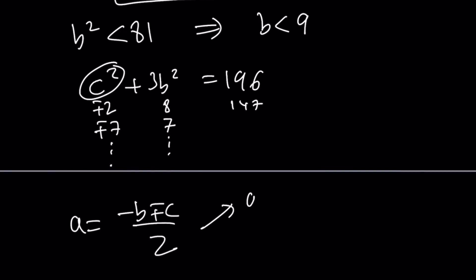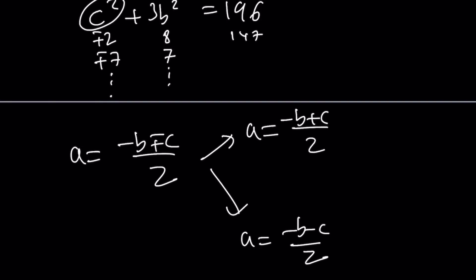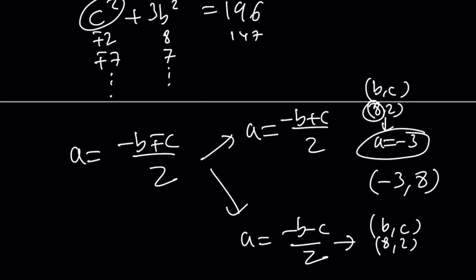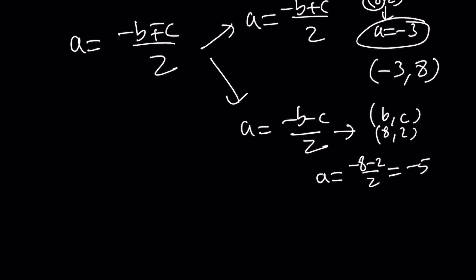We split into two cases: a equals negative b plus c over 2, or negative b minus c over 2. For example, suppose b equals 8 and c equals 2. Then negative 8 plus 2 divided by 2 is negative 3, giving a equals negative 3. So the ordered pair negative 3 comma 8 is a potential solution. Using the other case: negative 8 minus 2 divided by 2 is negative 5, giving the pair negative 5 comma 8. Both negative 3 comma 8 and negative 5 comma 8 work.